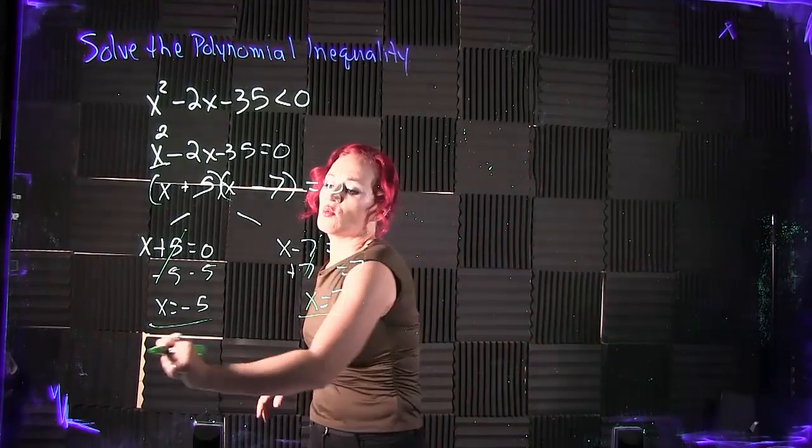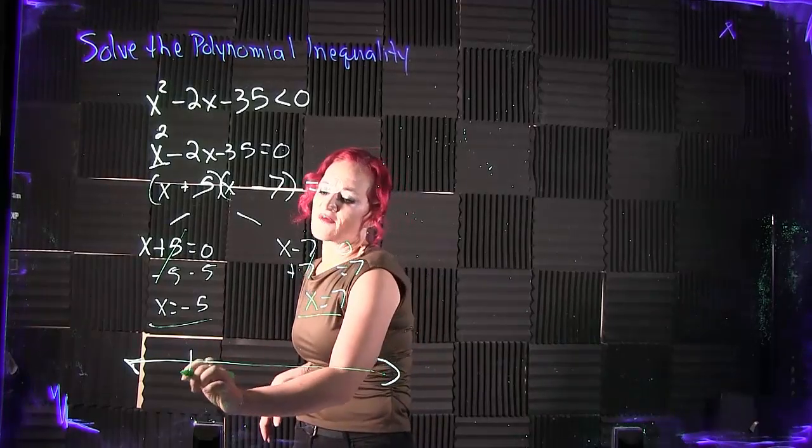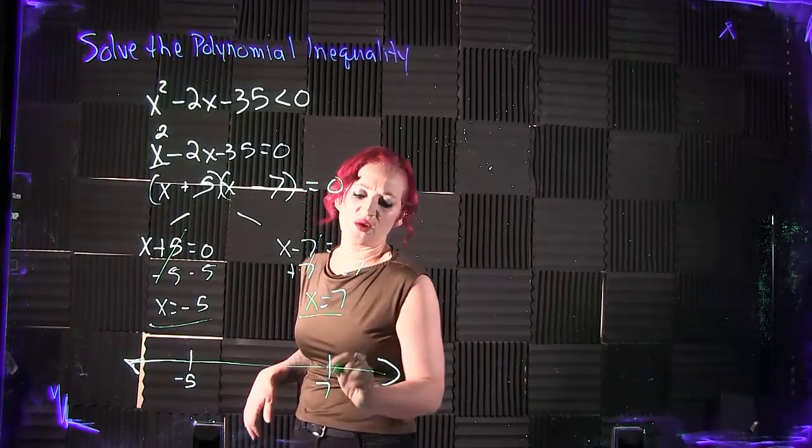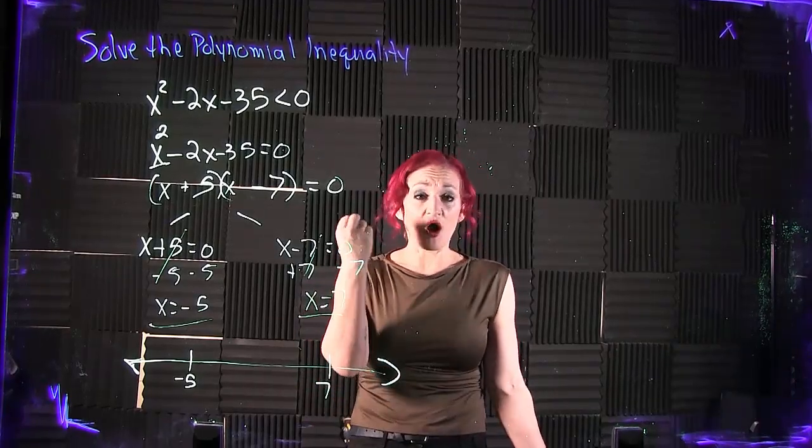What this tells us, if we're taking a look at our number line, here we have a negative 5, and then we have a 7. So negative 5 and 7 are called boundary points.